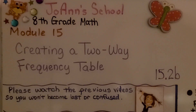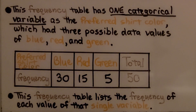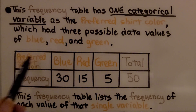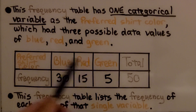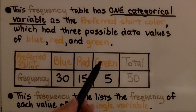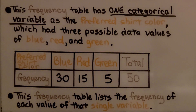Creating a two-way frequency table — lesson 15.2b. This is a frequency table with one categorical variable: the preferred shirt color, which has three possible data values of blue, red, and green. This frequency table lists the frequency of each value of that single variable.